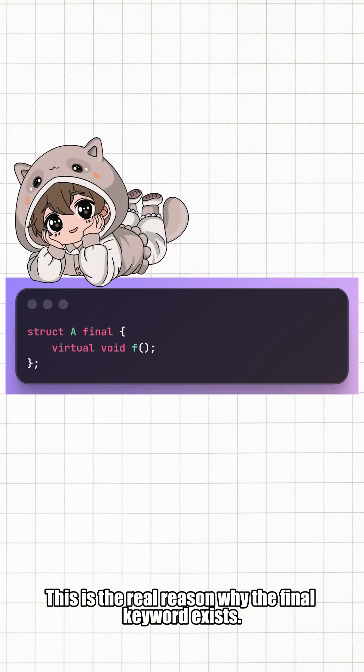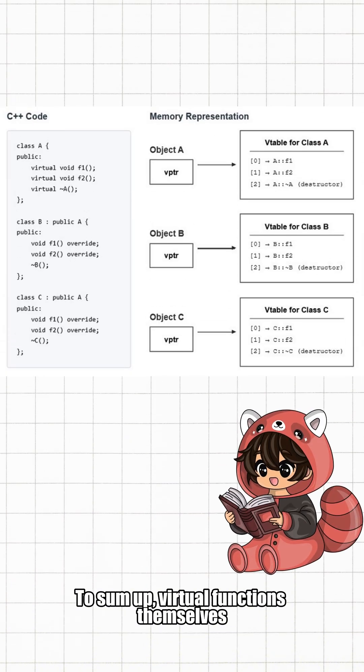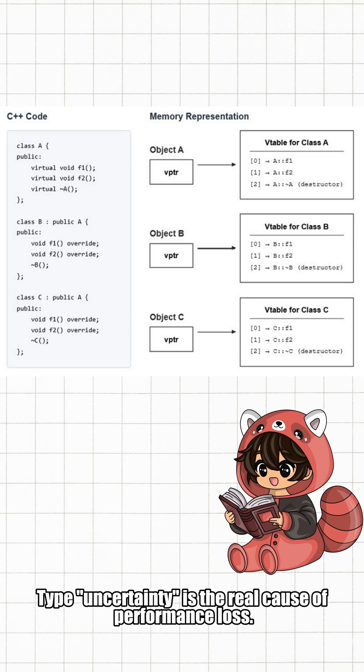To sum up, virtual functions themselves are not the source of slowness. Type uncertainty is the real cause of performance loss.